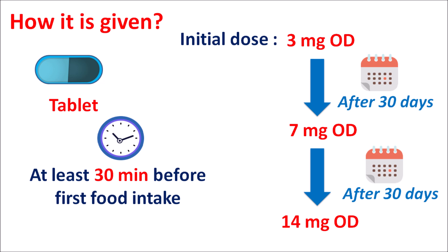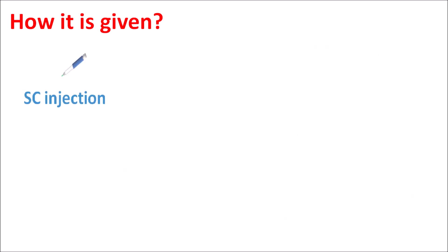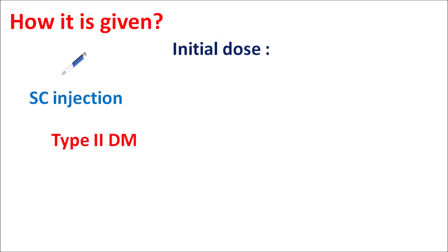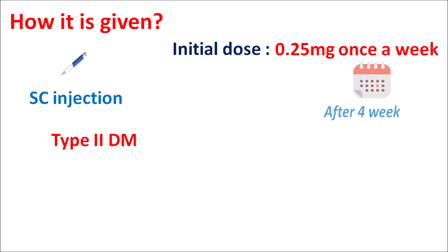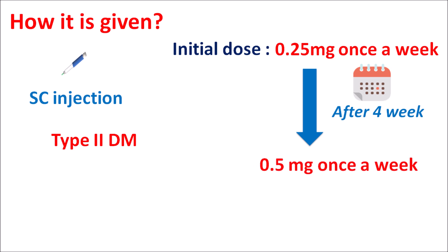Semaglutide is also available as a subcutaneous injection for the management of type 2 diabetes mellitus. The initial dose is 0.25 mg given as a subcutaneous injection once a week. After 4 weeks of treatment, the dose can be increased to 0.5 mg, which is used as the maintenance dose given every week to control blood glucose levels.